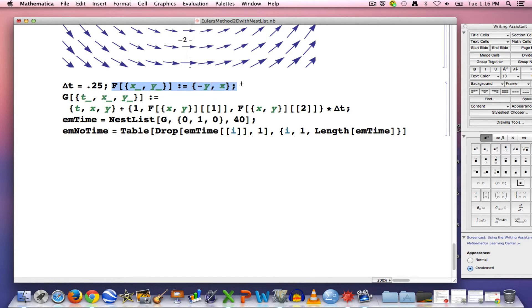This next formula that you see here is defining the vector field for the system of differential equations. It's essentially the right-hand sides of the system. dx dt in this case equals negative y. That's the first component of this vector field. And dy dt equals x. That's the second component.